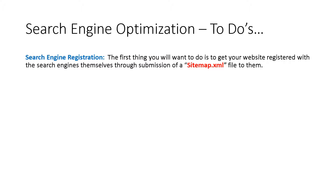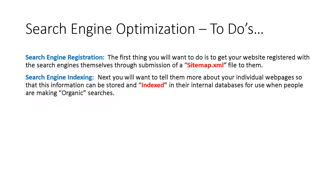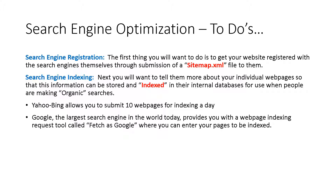Search engine indexing is next. Here you want to tell them more about your individual web pages so that this information can be stored and indexed in their internal databases for use when people are making organic searches. Each search engine has their own method of accepting web page indexing requests. For example, Yahoo Bing allows you to submit 10 web pages for indexing a day, and Google, the largest search engine in the world today, provides you with a web page indexing request tool called Fetch as Google, where you can enter your pages to be indexed.